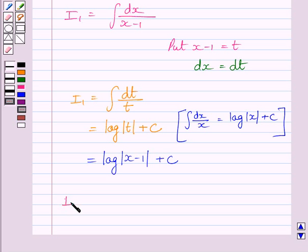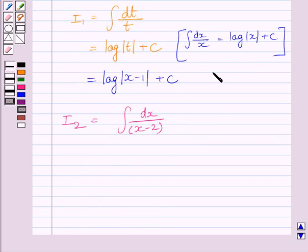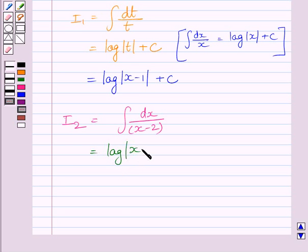Similarly, we can find I2. We know I2 is equal to the integral of dx upon (x minus 2). Using the same method, the integral of dx upon (x minus 2) is equal to log of (x minus 2) plus c.